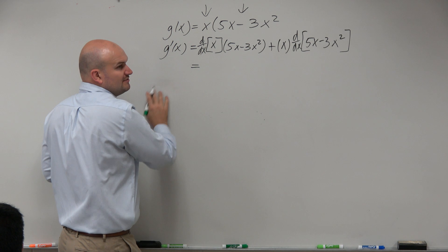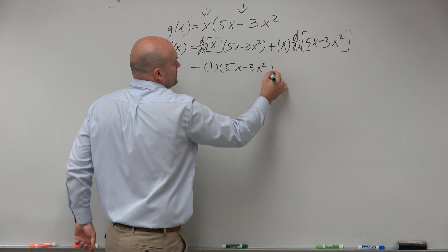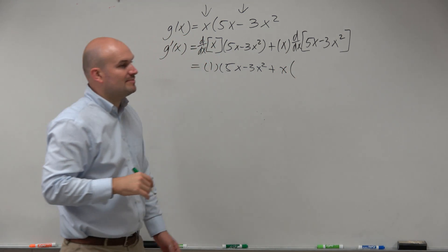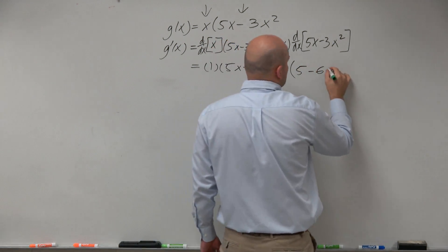So, what is the derivative of x? One. Times 5x minus 3x squared plus x times the derivative of 5x squared minus 3x squared is just going to be 5 minus 6x.